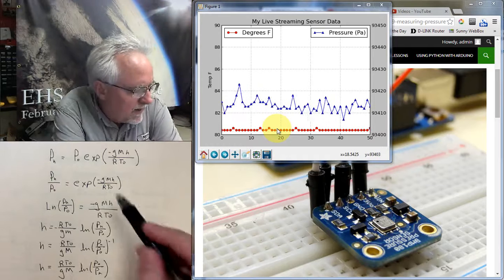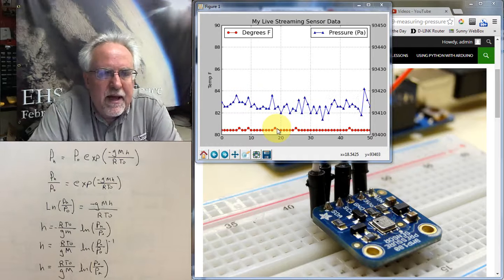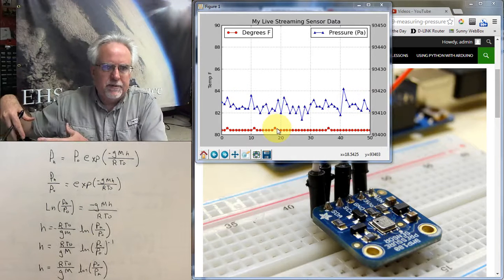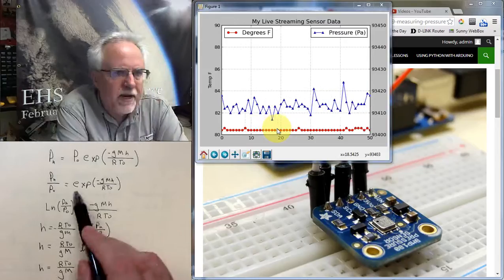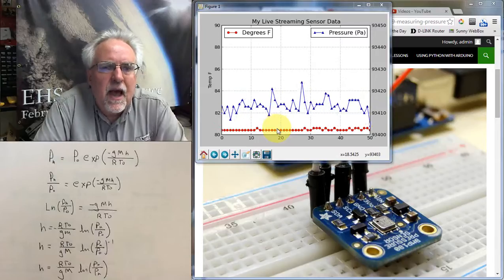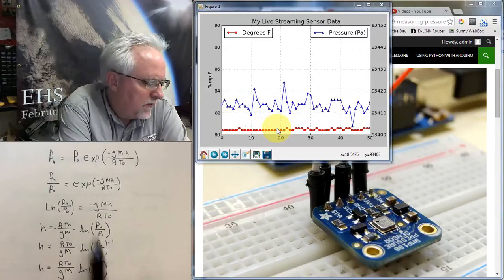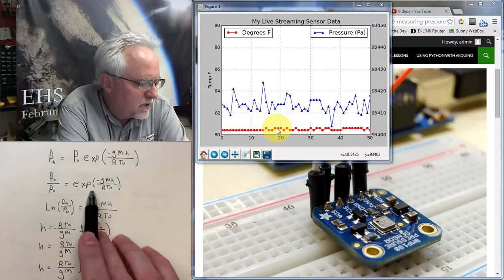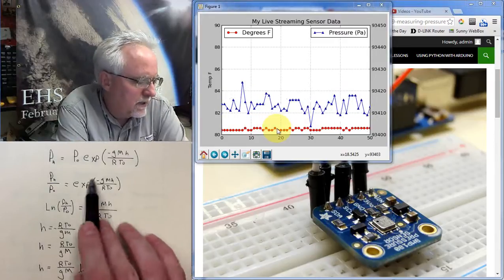Now, we've got to get the H out from that exponential. We've got to get that exponential off of there. Well, how can I get rid of an exponential? That's an e to the. How do I get rid of an e to the? I take the log of it. So if I take the log of an exponential, the exponential will drop out, and I'll just be left with this term.